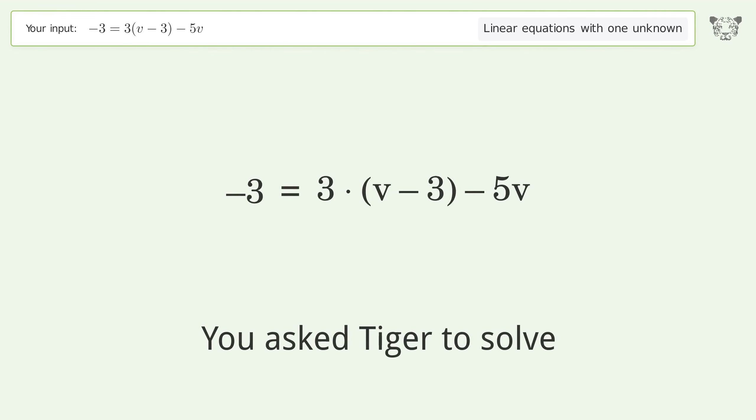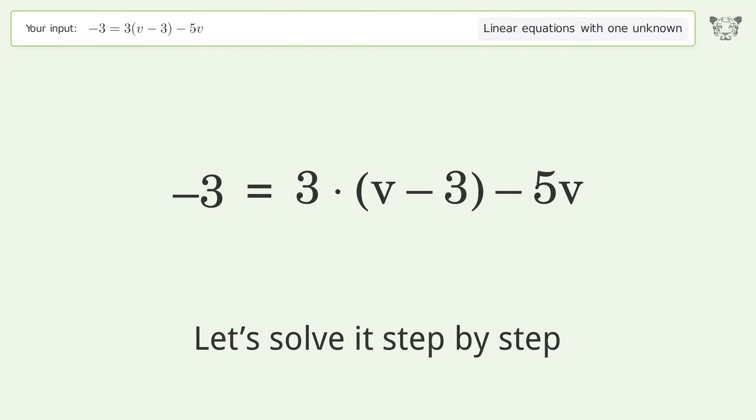You asked Tiger to solve this linear equation with one unknown. The final result is v equals negative 3. Let's solve it step by step. Simplify the expression.